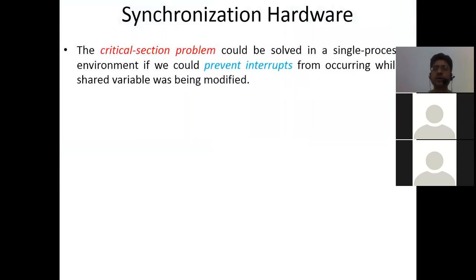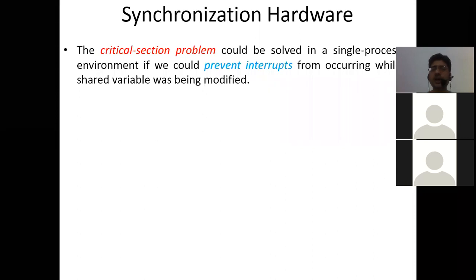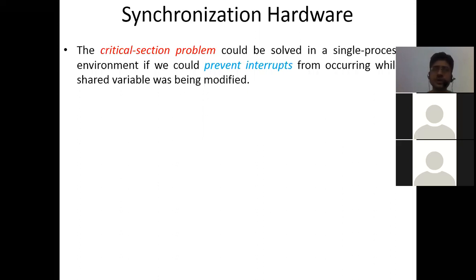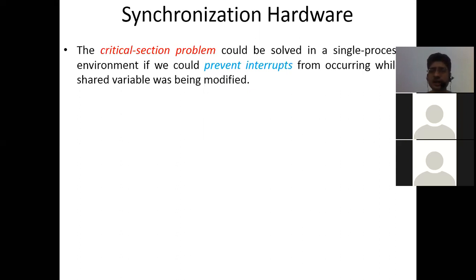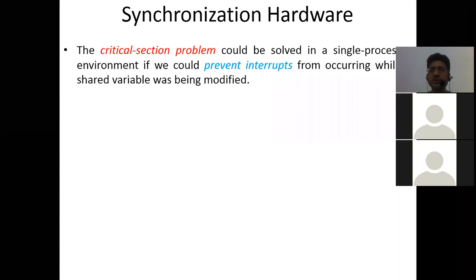The critical section problem could be solved in a single processor environment if we could prevent interrupts from occurring while a shared variable was being modified. We have studied system calls — whenever a process requires any service from the operating system, it calls a system call to use hardware resources. So if one process is executing the critical section and another process gives an interrupt, the operating system can block that interrupt, keeping the shared variable intact.